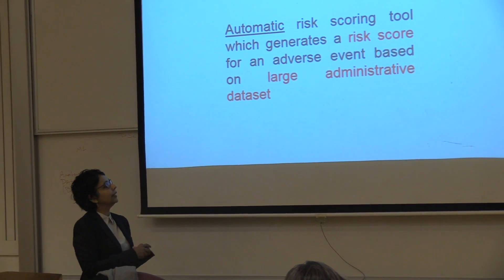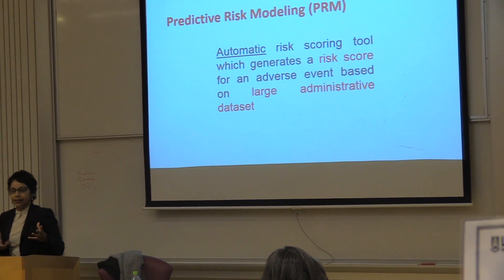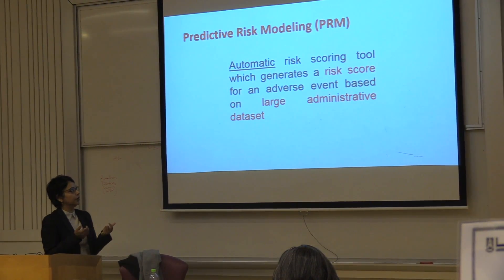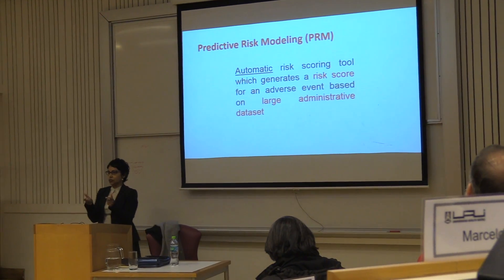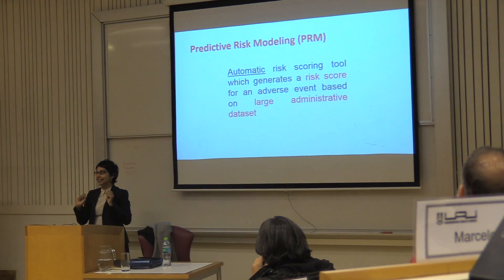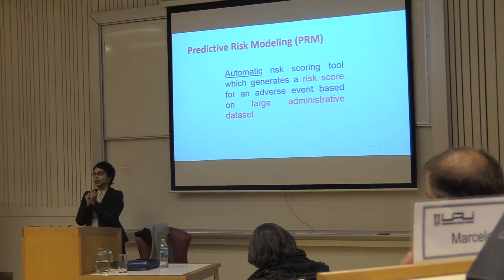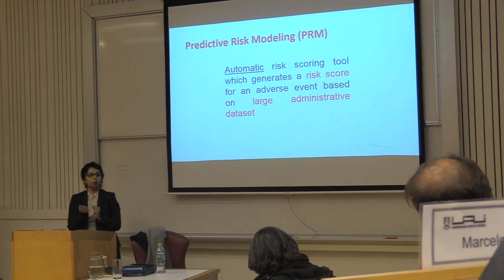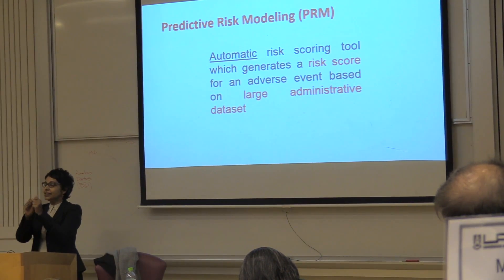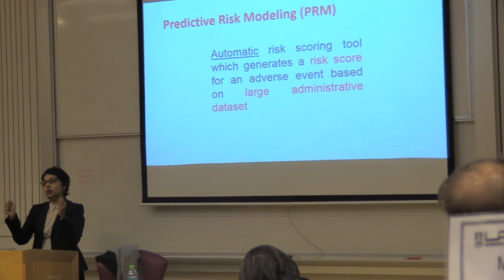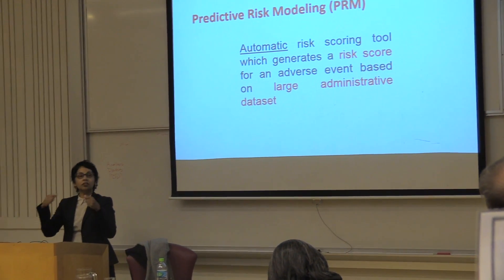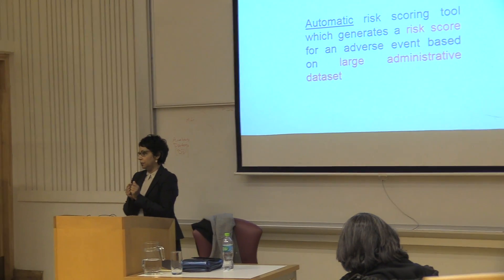What is predictive risk modeling? In this context, it's an automated risk scoring tool which generates a risk score. It's a risk model in that it's not an algorithm that tells you zero or one — yes, this child will be maltreated or no it won't. What it's doing is taking data and giving you a score of zero to one which tells you the probability that this child will be maltreated.